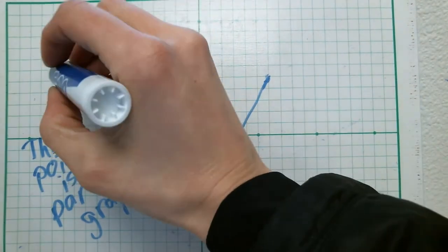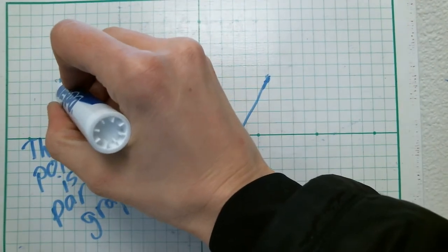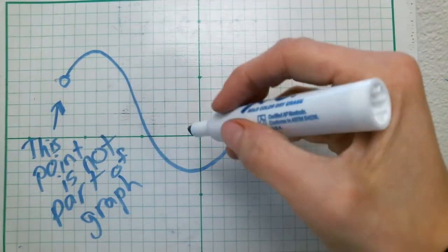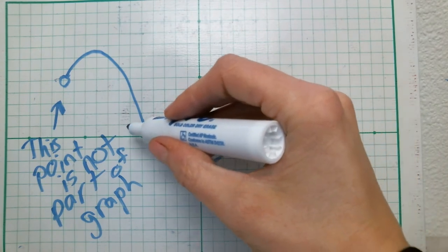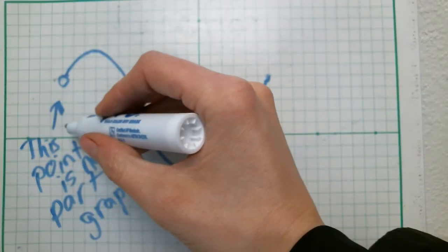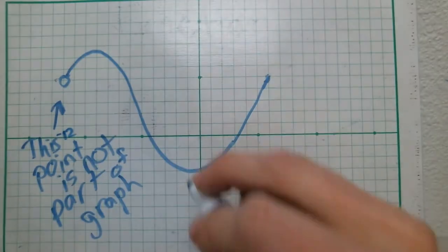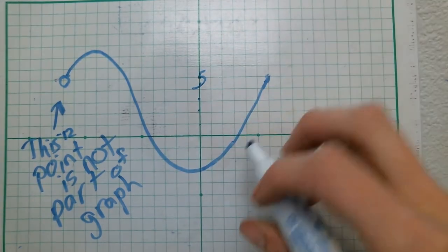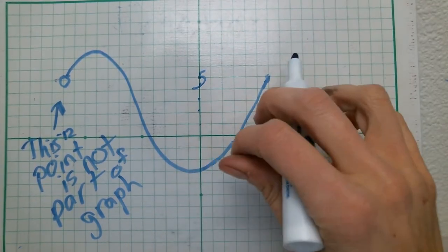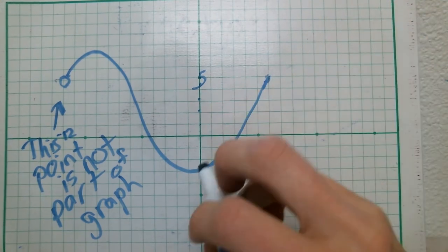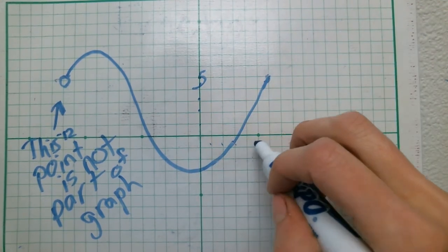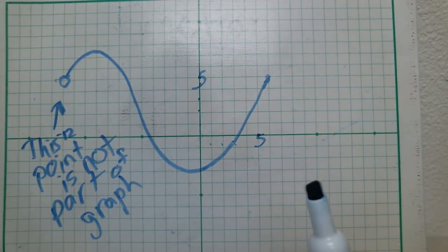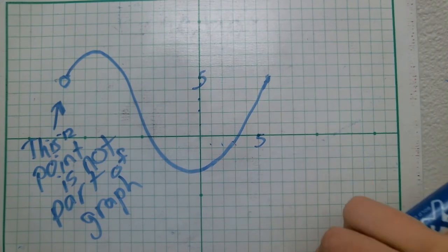Looking at the starting point, the x value is negative 12 and the y value is 5. The end of the graph is at x equals 6, and y is also 5. For our domain, we're looking at the x values included in this graph. The open dot is not included, so I'll use a less than sign. The solid dot is included, so I'll use a less than or equal to sign. My smallest x value is negative 12 and my largest is 6, so the domain is negative 12 less than x less than or equal to 6.